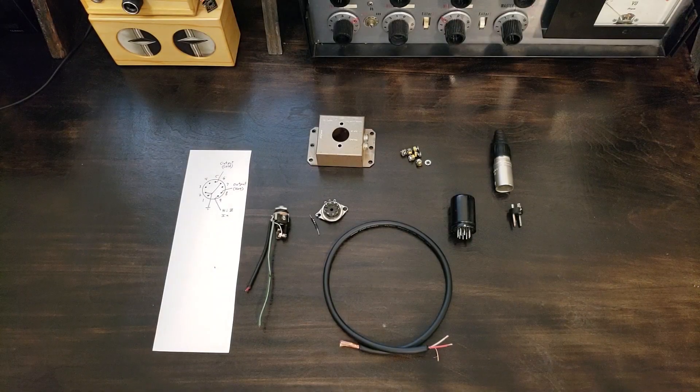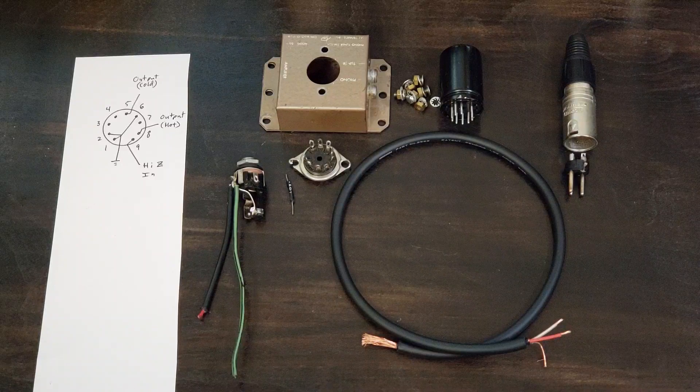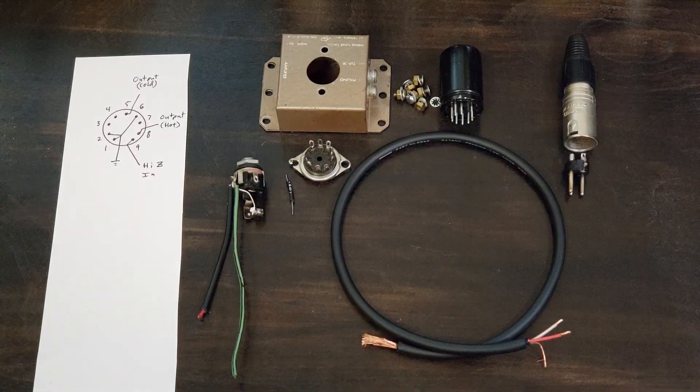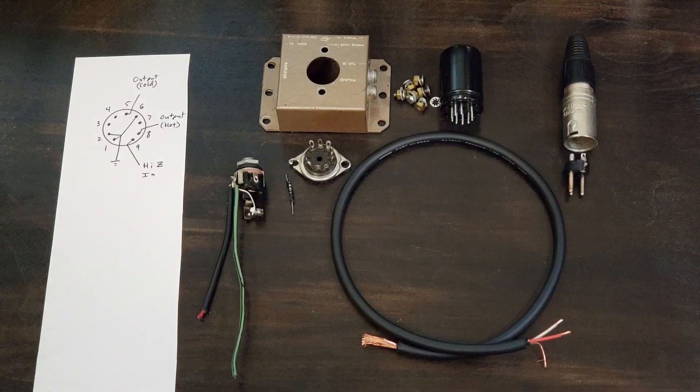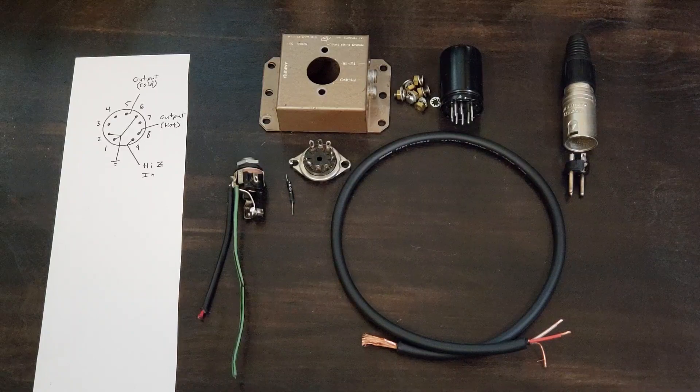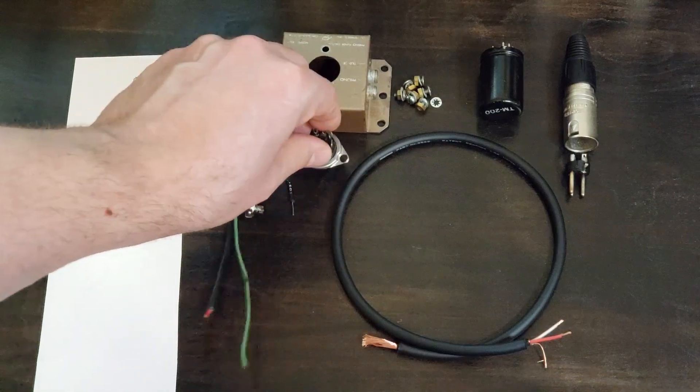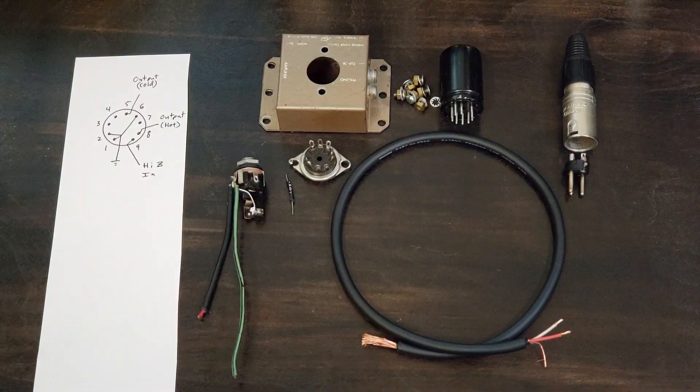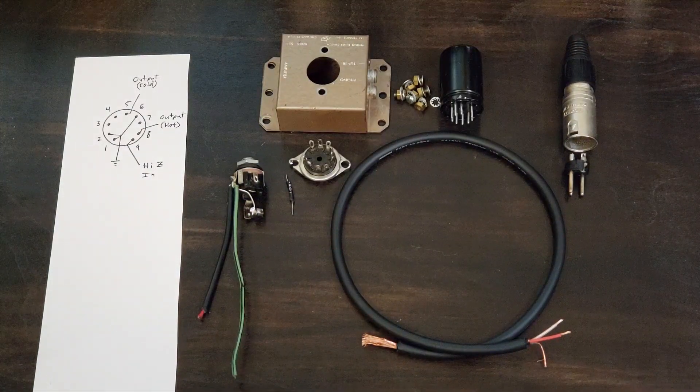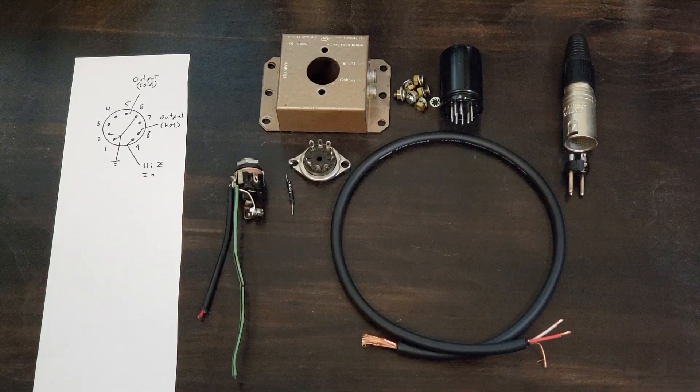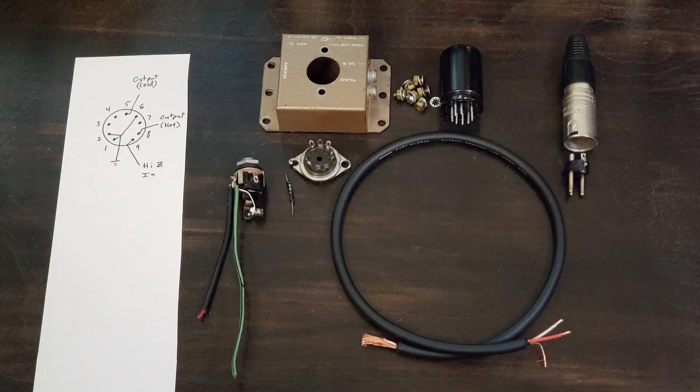These are the parts we're working with today. We've got our wiring diagram, very important, a quarter-inch jack that's been wired with a ground wire and a shielded input wire. Since my transformer has nine pins, we also have a noble socket, a suitable box, some screws, washers, and nuts, a male XLR connector, and some two conductor shielded wire or standard mic cable.